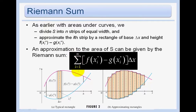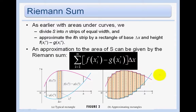We will be adding up all of the n strips. The height of each rectangle is going to be f of x minus g of x, since the f of x curve is always above the g of x curve on the region from a to b. So our height is f of x minus g of x, and our width is delta x.